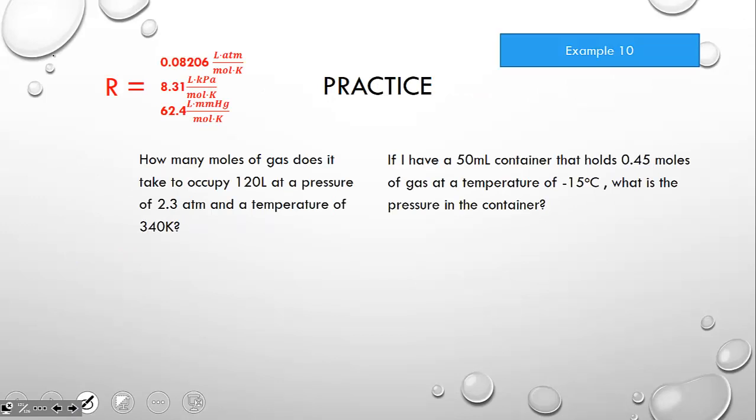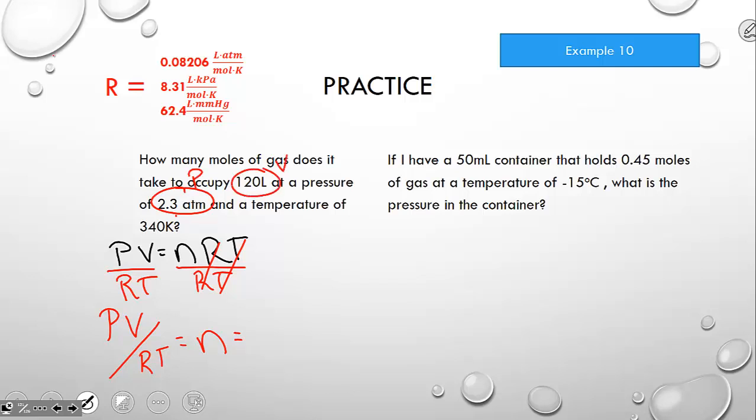For this first question, exercise 10, our last one of this unit, how many moles of gas does it take to occupy 120 liters at a pressure of 2.3 atmospheres and a temperature of 340 kelvin? The formula is PV equals nRT. If I want n by itself, I can divide by RT on both sides. So the pressure times the volume divided by R times the temperature will tell me the number of moles of gas. I've got a pressure, a volume, and a temperature, so I can go ahead and plug those in: 2.3, 120 liters, 340 kelvin.